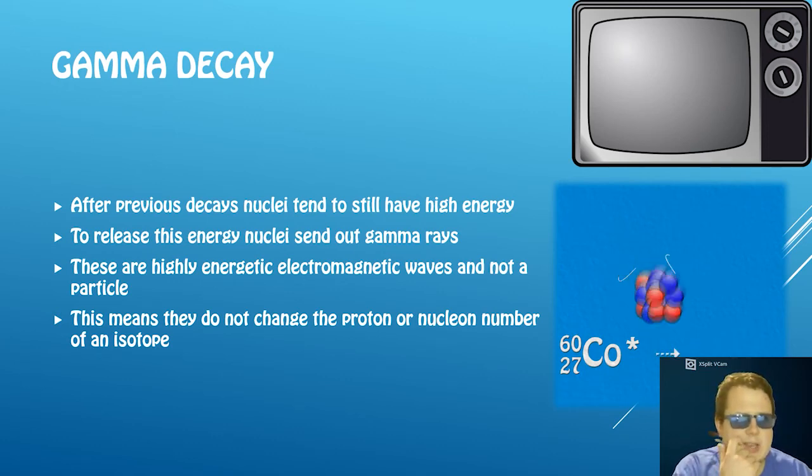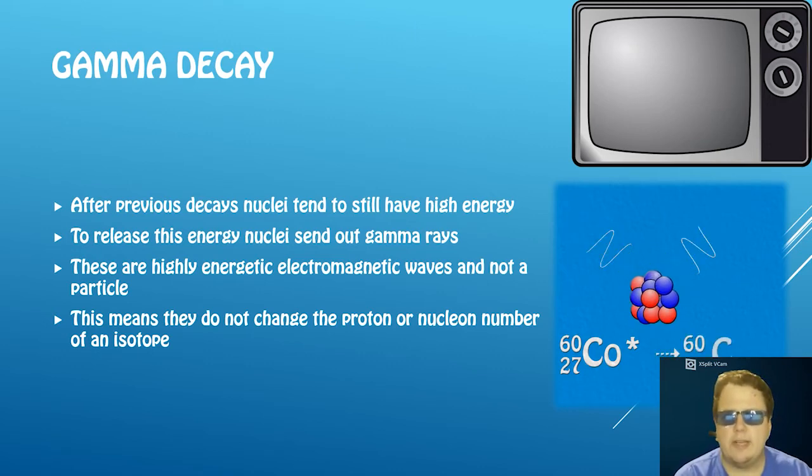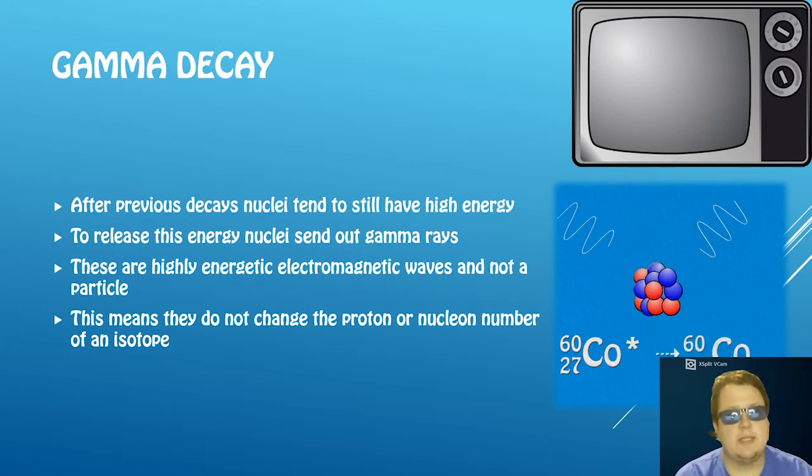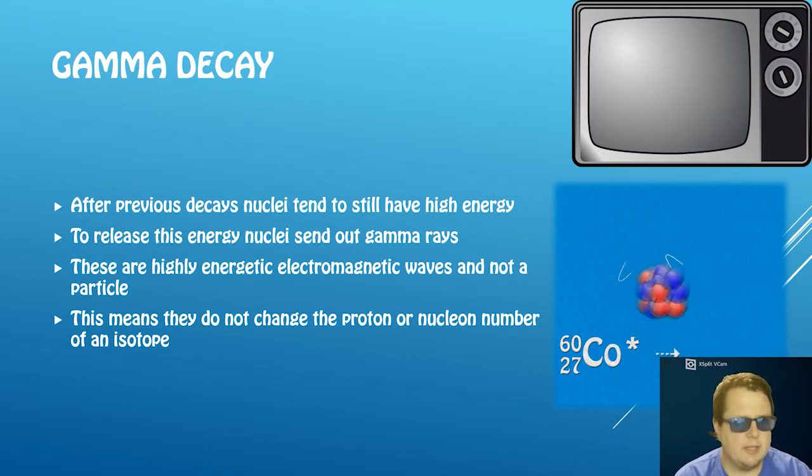Now gamma decay. Gamma is part of the electromagnetic spectrum. So where gamma decay comes from is basically generally one of our nuclei that's decayed before still has a lot of energy, still is unstable, and it wants to get rid of some of this energy. And the way it does is it emits electromagnetic rays - gamma radiation.